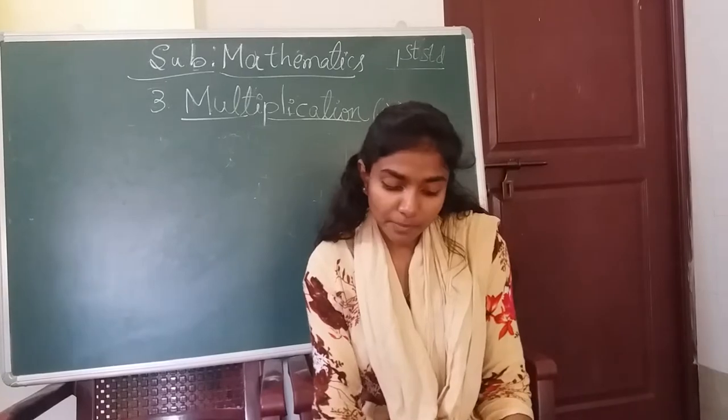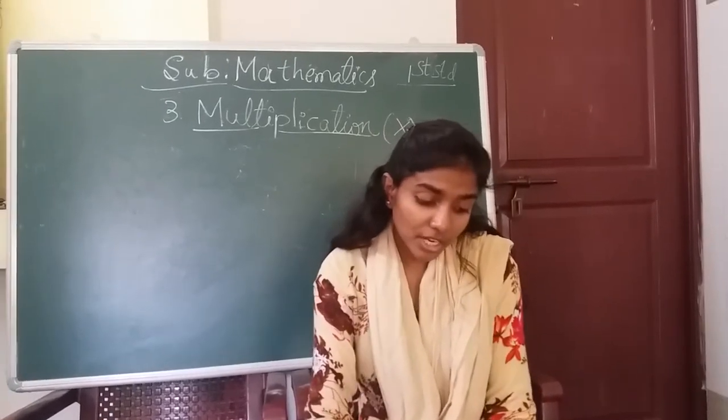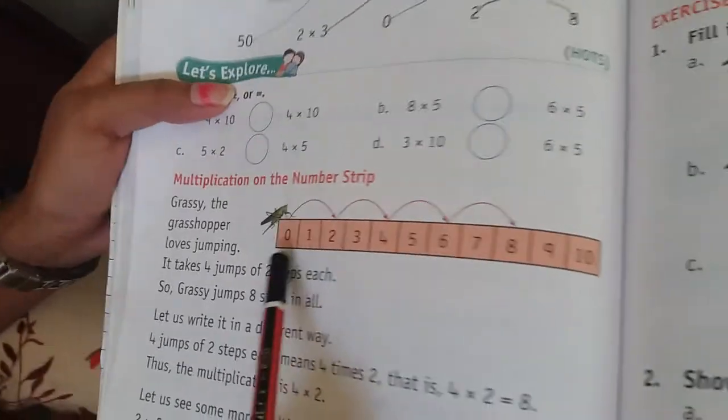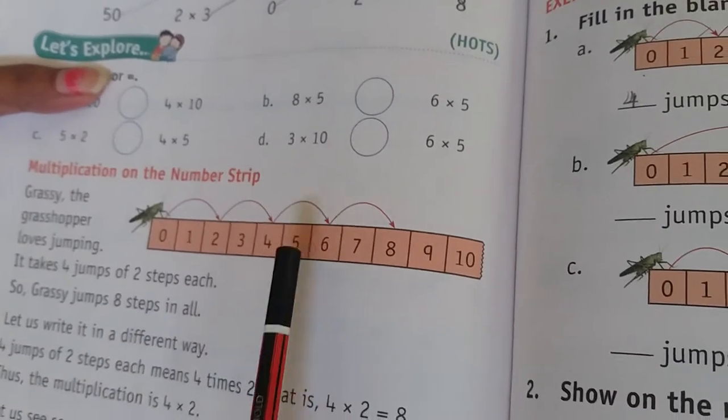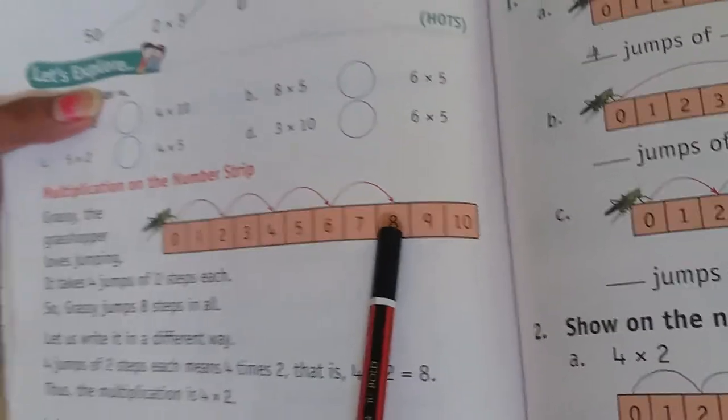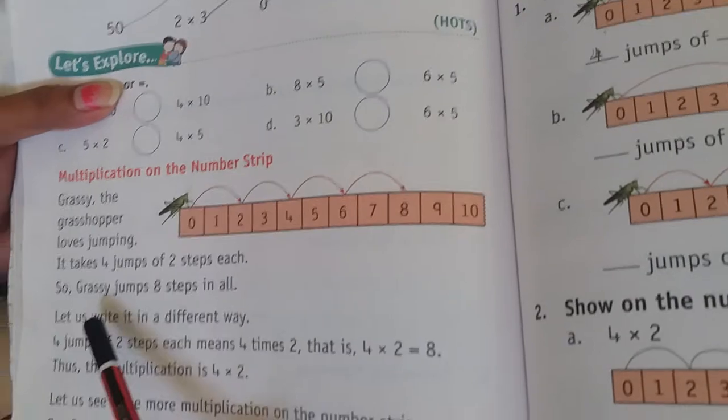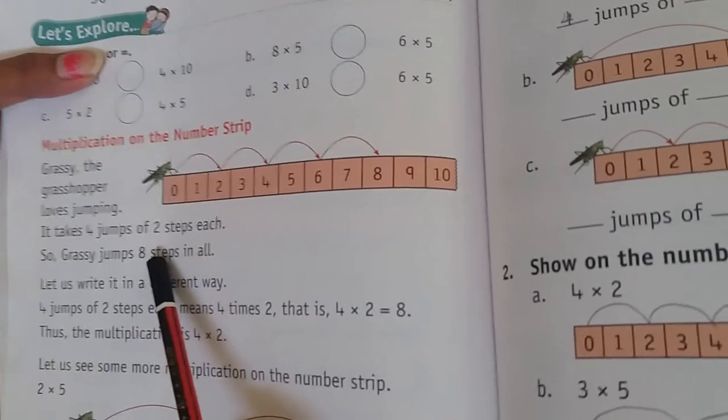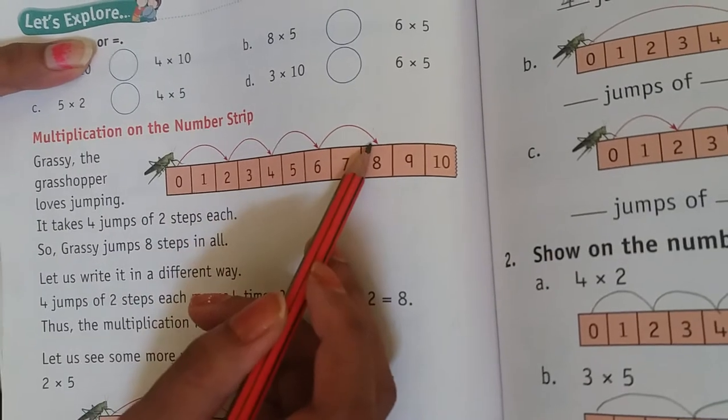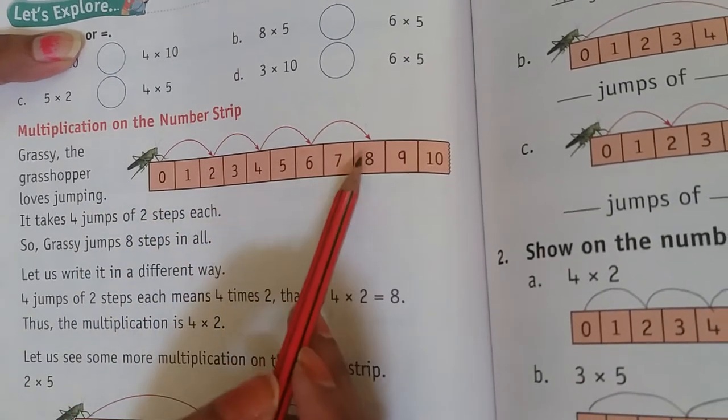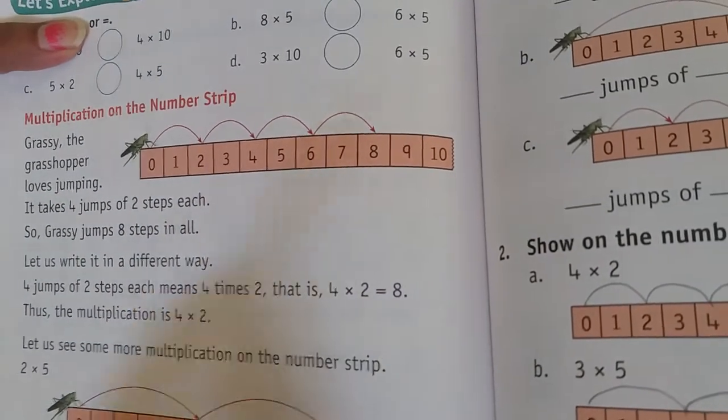So now I am doing multiplication on the number strip. Here, see, grassy jumps 8 steps in all. See, 1, 2, 3, 4, 4 steps, 8 steps in all. Okay, so let's see.